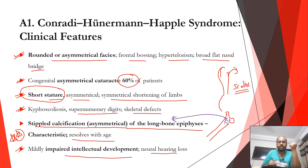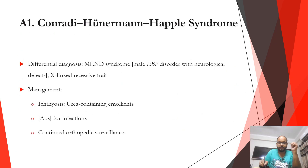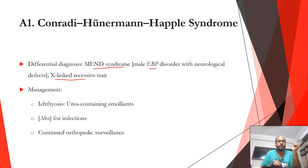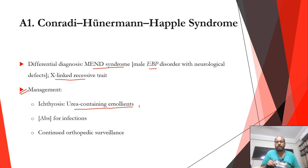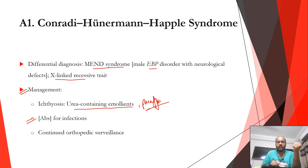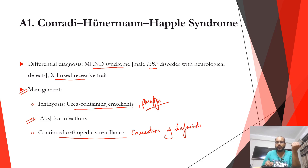Remember that stippled calcification improves with age. The differential diagnosis includes MEND syndrome, in which the EBP gene is also mutated but with an x-linked recessive trait. Management includes urea-containing emollients and paraffin-based emollients for ichthyosis, which improves with age. Topical or systemic antibiotics depending on the level of infections, and orthopedic surveillance with correction of deformities — spinal and other skeletal defects need to be addressed.